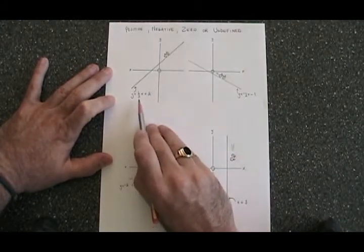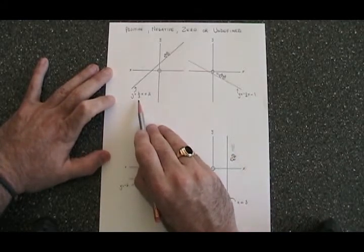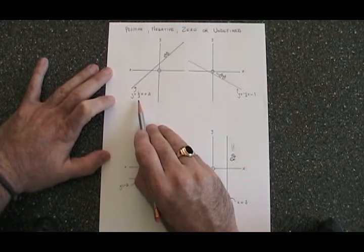In this first example, I can see from the equation, using the y equals mx plus b form, that my slope is positive two-thirds.